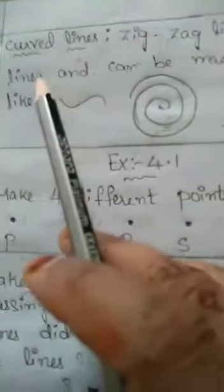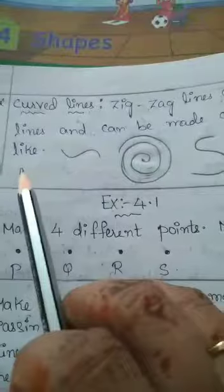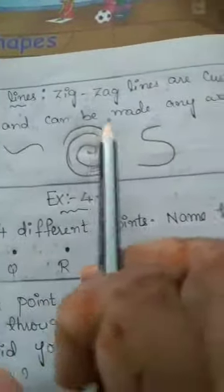Last is curved lines. Zigzag lines are curved lines and can be made any way you like. So these are zigzag lines, which are curved lines.